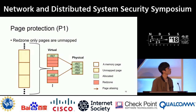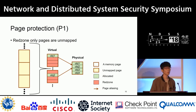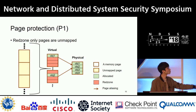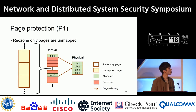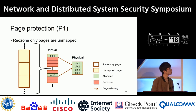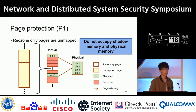To further optimize physical memory use, we use the page protection mechanism supported by the operating system. There are many red-zone-only pages between object pages, and we reserve them but keep them unmapped to any physical page. So red-zone-only pages do not occupy shadow memory or physical memory.